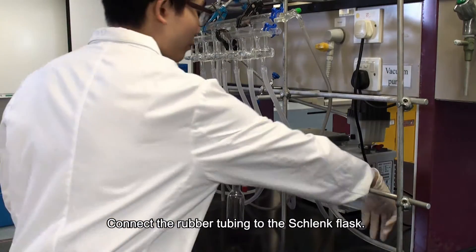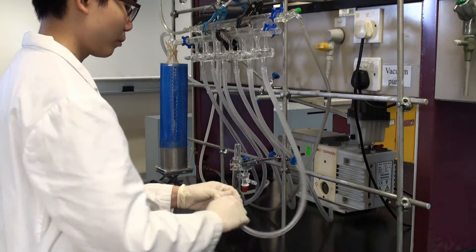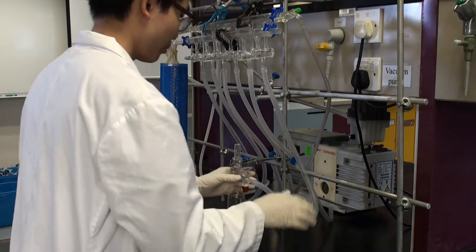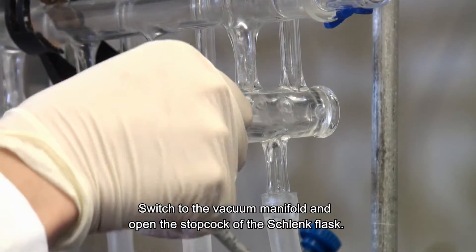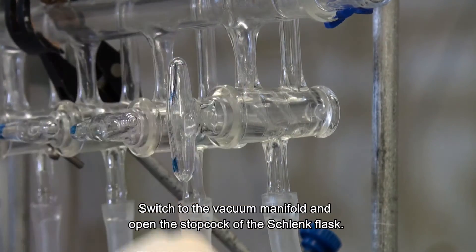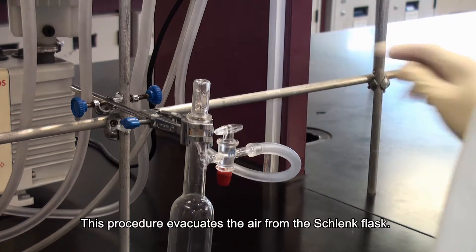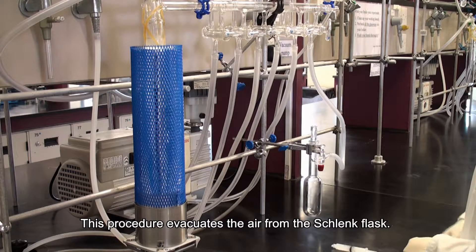Connect the rubber tubing to the Schlenk flask. Switch to the vacuum manifold and open the stopcock of the Schlenk flask. This procedure evacuates the air from the Schlenk flask.